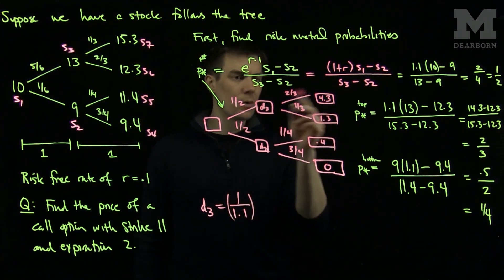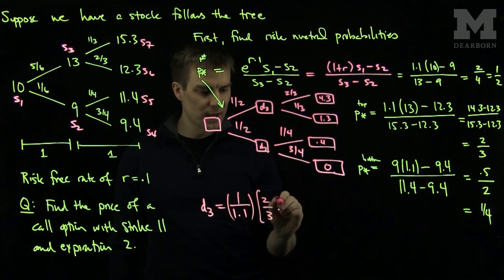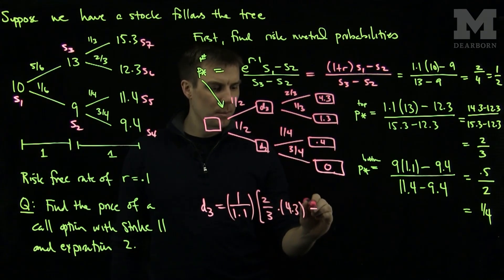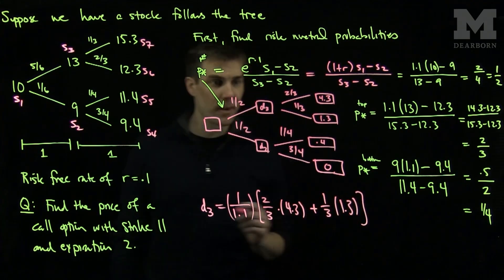times the expected value of this branch. So it will be 2 thirds times 4.3 plus 1 third times 1.3. That will be my d3.